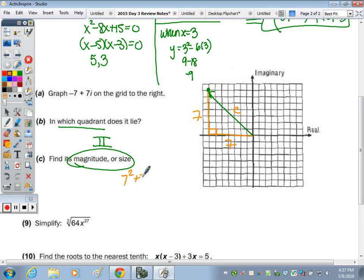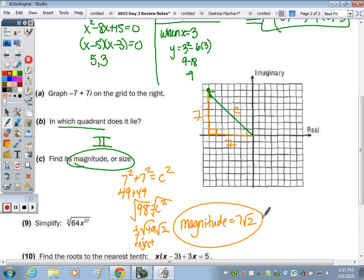So 7 squared plus 7 squared equals c squared. 49 and 49 is 98. Take the square root and break it down. 49 and 2, rejecting the negative because it's a length. Our magnitude equals 7 radical 2.